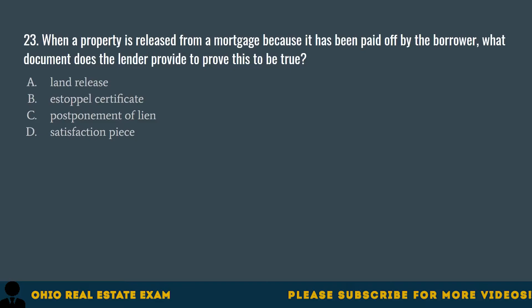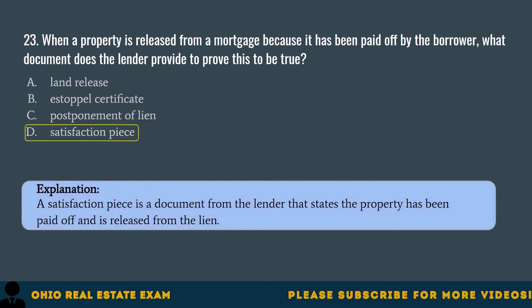Question 23. When a property is released from a mortgage because it has been paid off by the borrower, what document does the lender provide to prove this? A. Land release. B. Estoppel certificate. C. Postponement of lien. D. Satisfaction piece. The correct answer is D. Satisfaction piece. A satisfaction piece is a document from the lender that states the property has been paid off and is released from the lien.